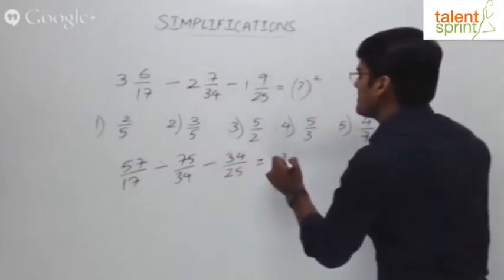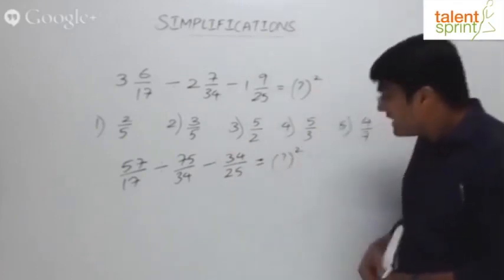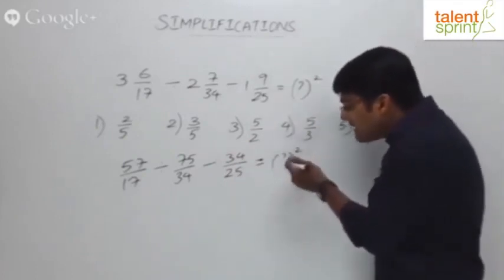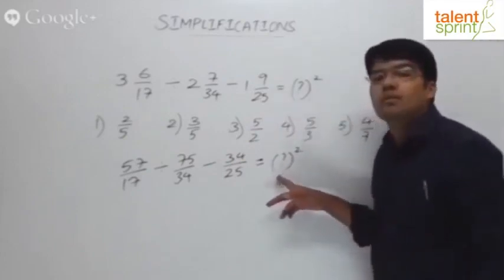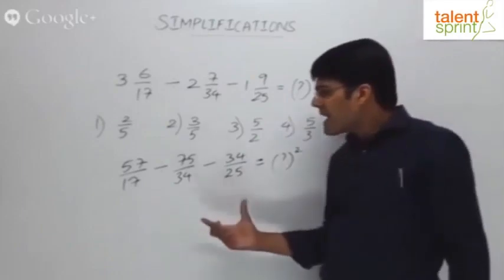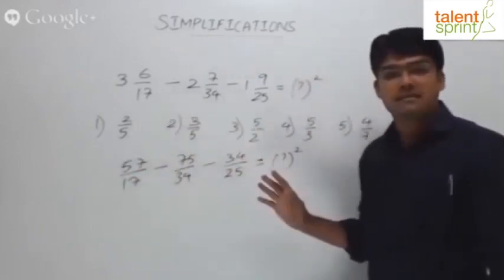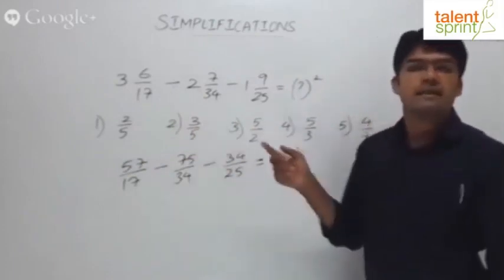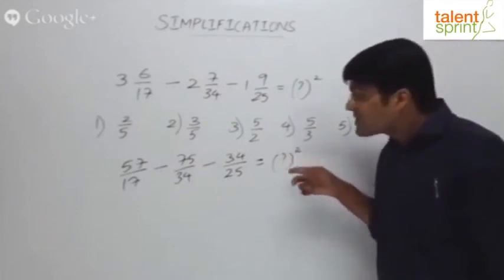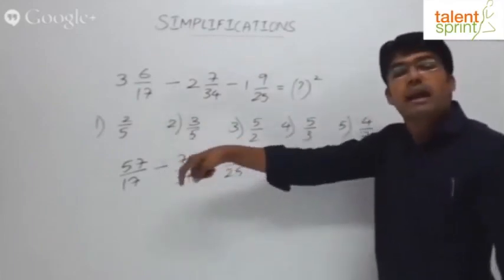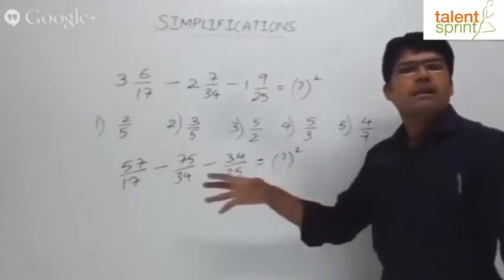You have to be particularly careful with questions involving question mark squared. Sometimes students simplify the left-hand side, get a result, and mark that directly as the answer — that is wrong. Since the right-hand side is question mark squared, we must take the square root of the result we get to find the correct final answer.